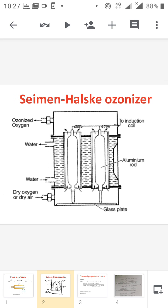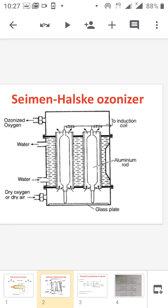Dry air is passed in from the bottom of the ozonizer and through this glass tube. High voltage is applied to the aluminum rod, and in this glass tube the oxygen is converted into ozone. The ozonized oxygen comes out from the top of the ozonizer.